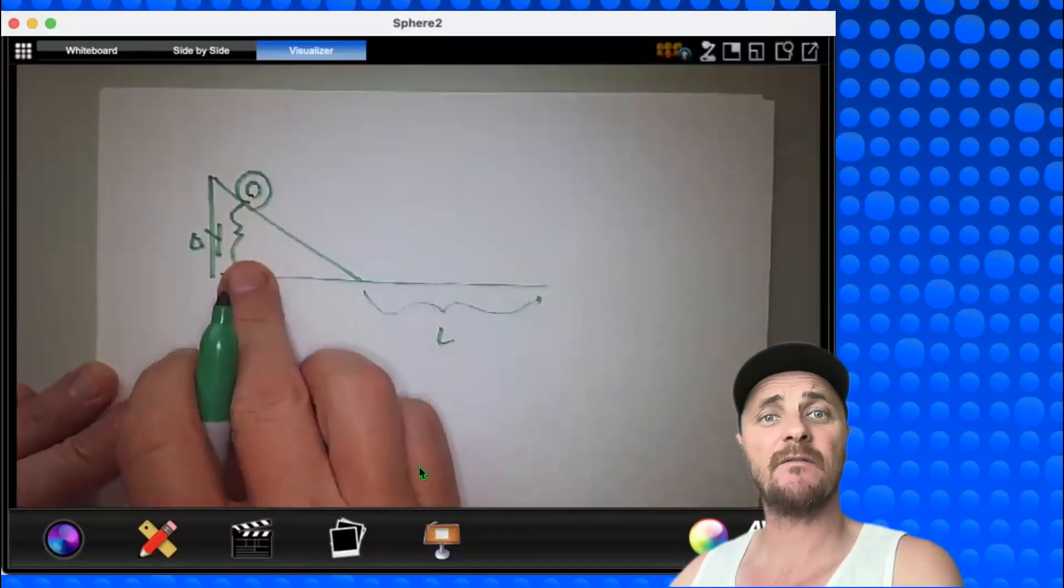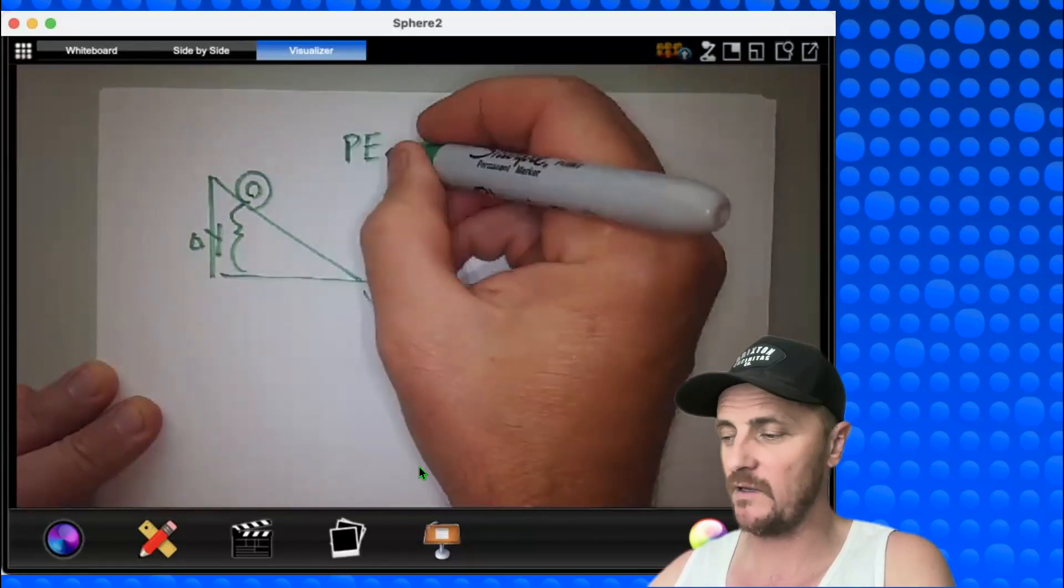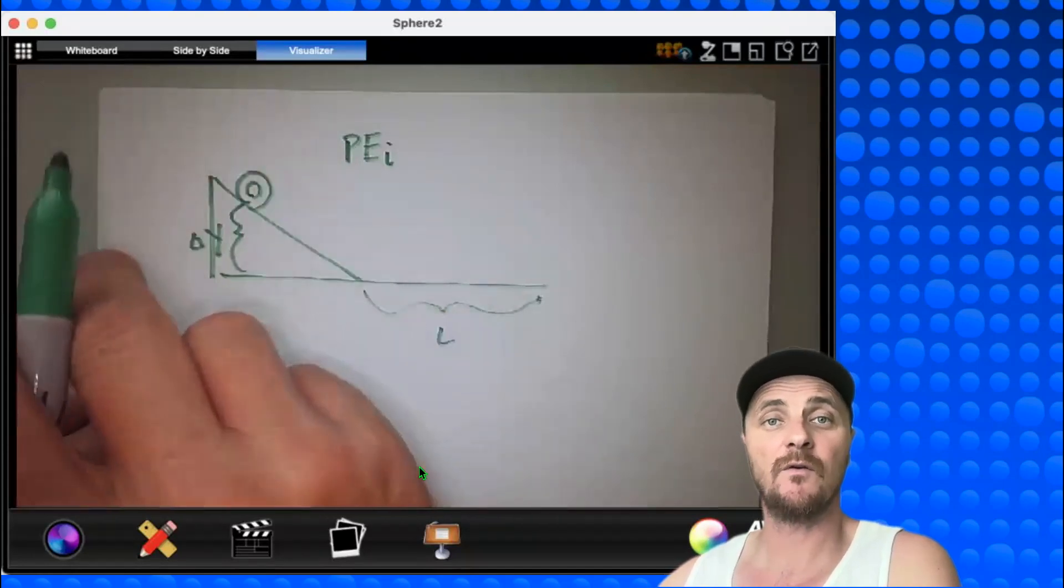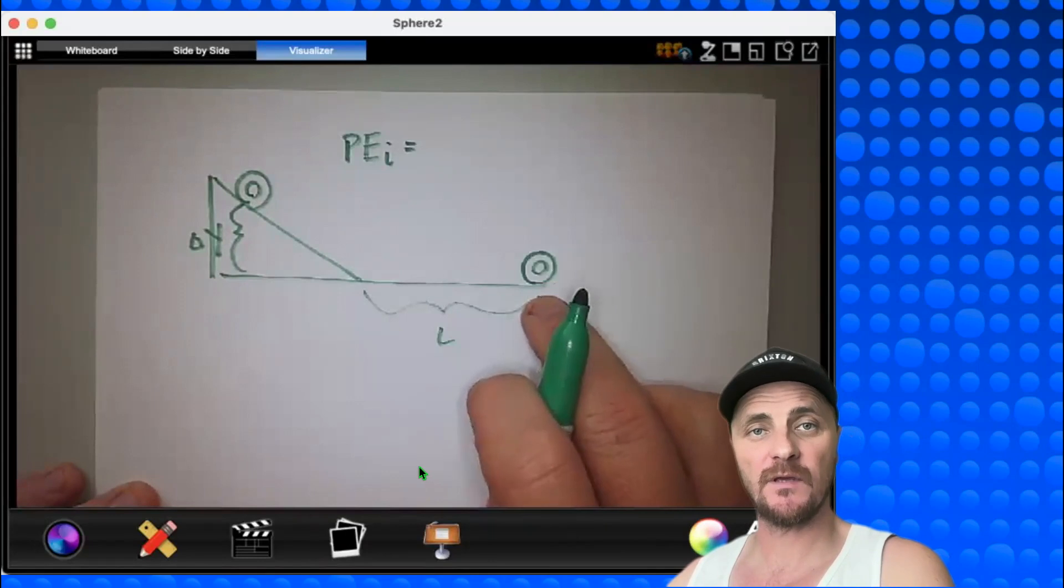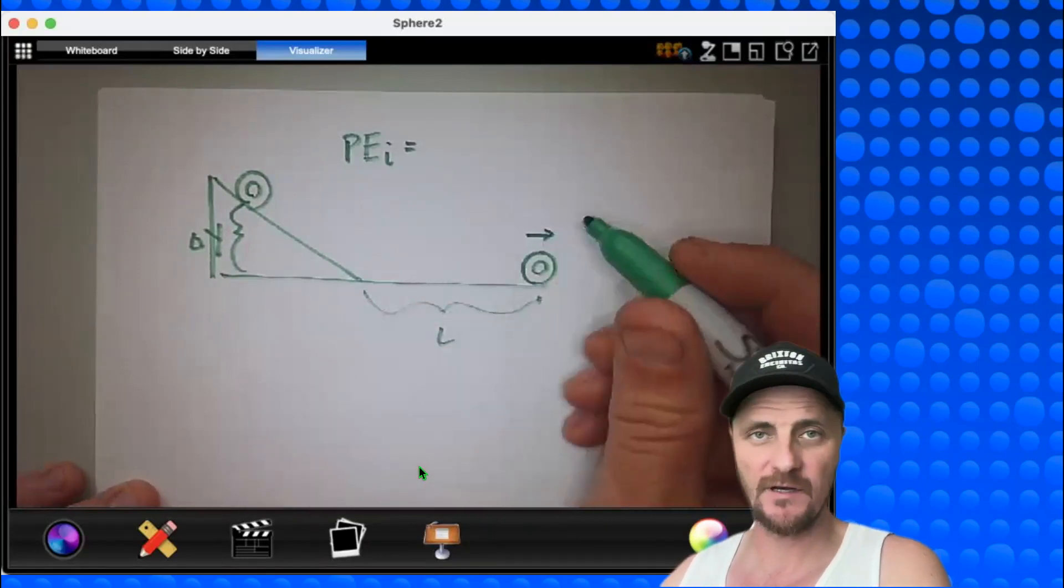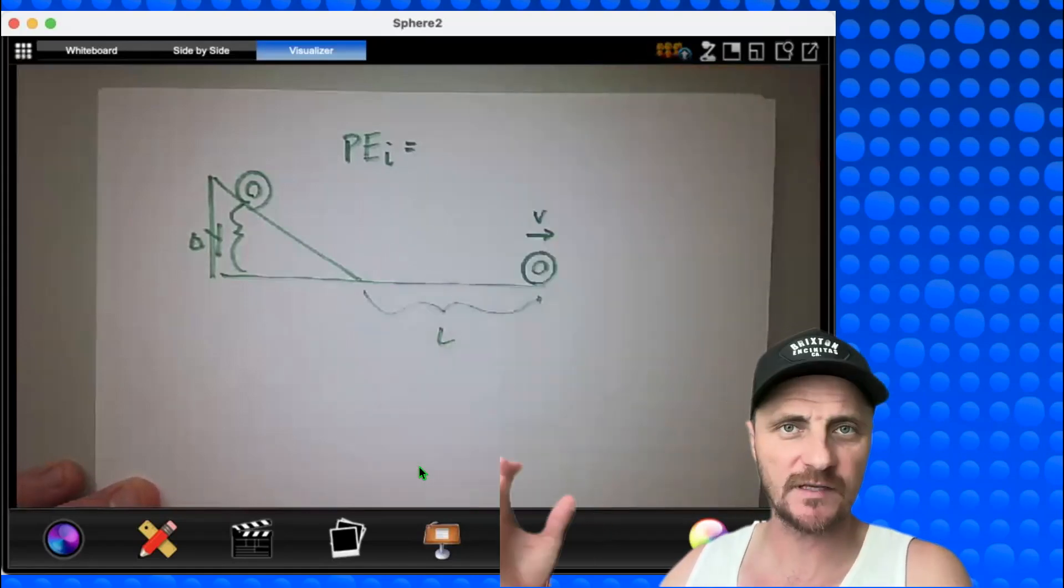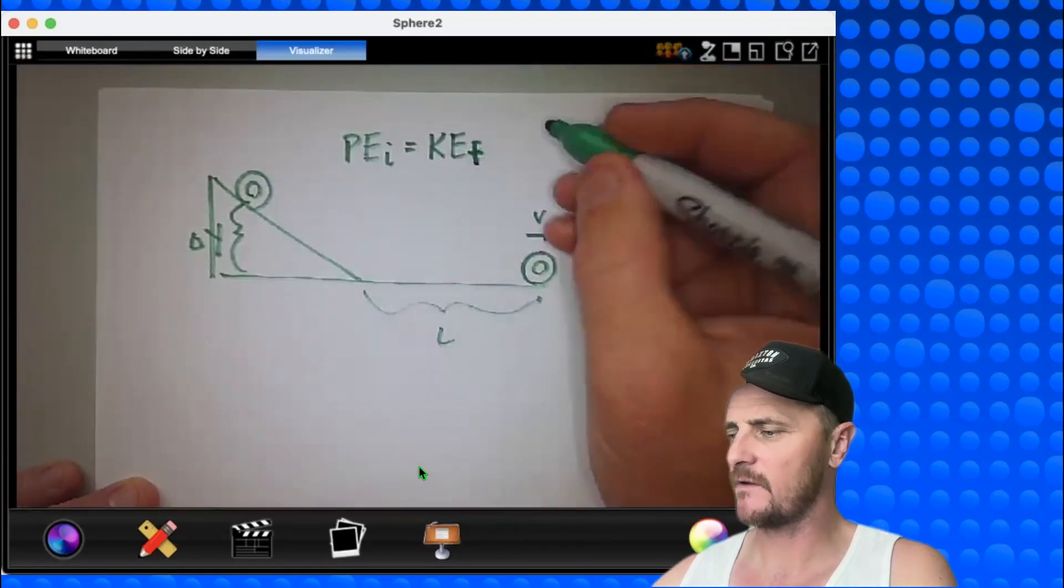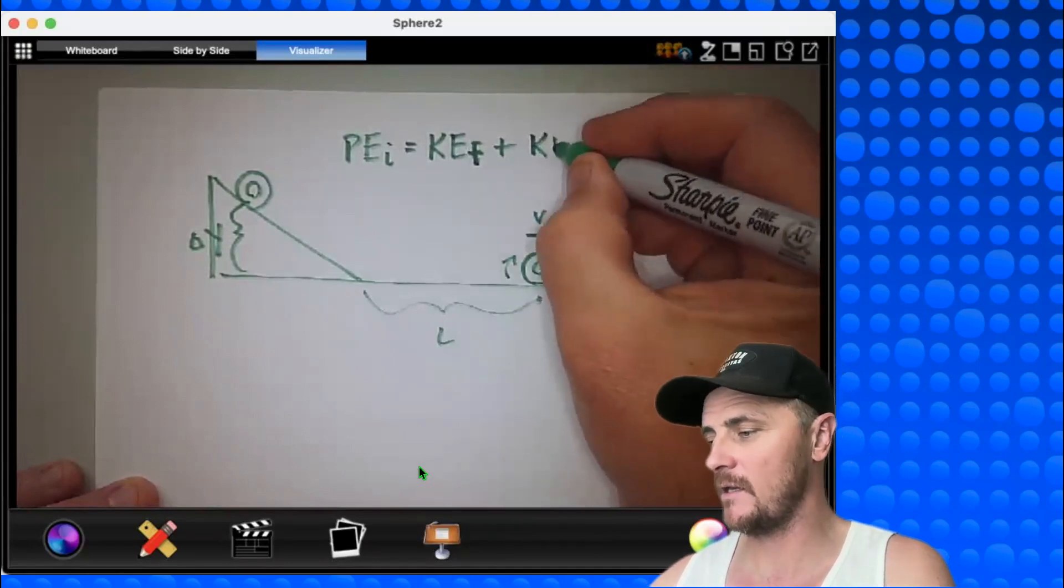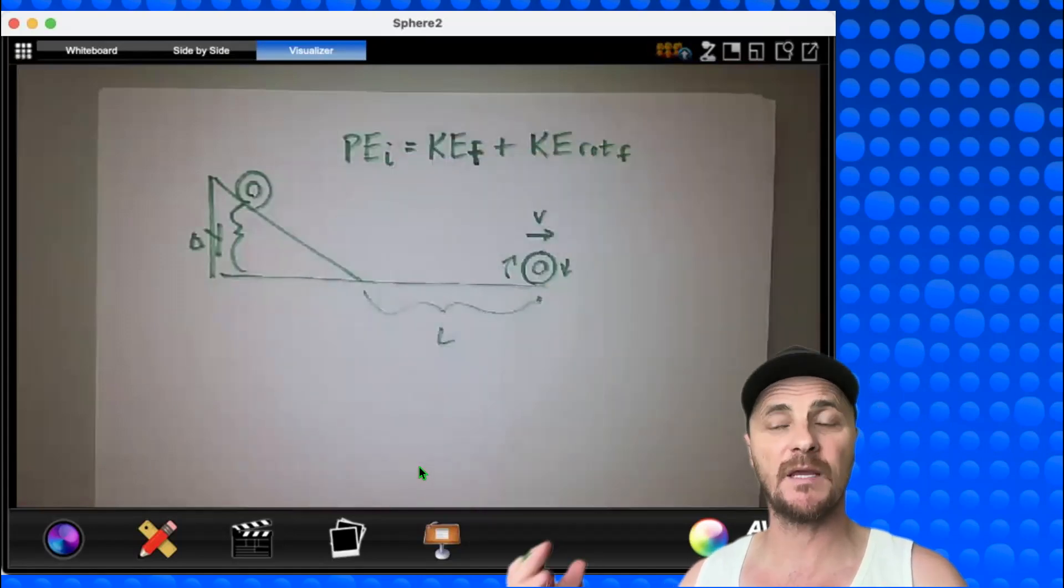So what energy do I have at delta y? Well, it's not moving yet, so I only have potential energy due to gravity. So PE initial. There is no other energy in the system. The cylinder is not moving, nor is it rotating. But when we get to this final location, after we've traveled a length l, we definitely have translational kinetic energy because there is a linear velocity. That's the same as linear kinetic energy, translational kinetic energy. So I'll put KEf plus, this thing is also rotating, so therefore I have rotational kinetic energy. So I'll put KE rot f. Now we just need to plug in the expressions that go with each one of these types of mechanical energy.